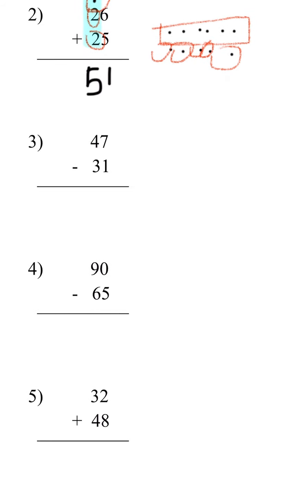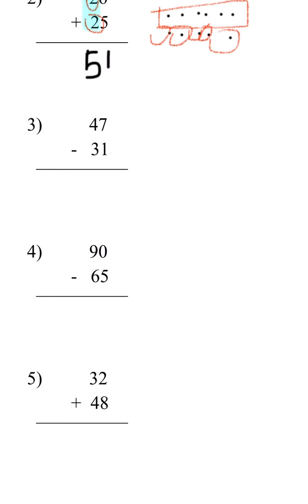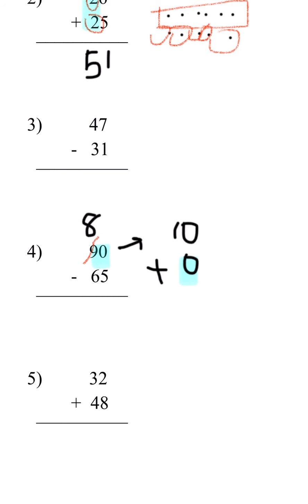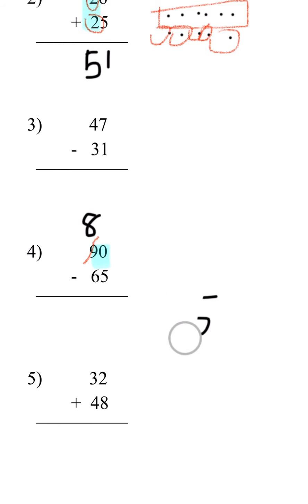Now for number 4, we have 90 minus 65. Again, we have to start with the 1's place, but we can see that 0 is less than 5. We're going to borrow 1 tens from 9. 9 minus 1 is 8. And this 0 — we're going to do 10 plus 0 — the 1 doesn't have any numbers below so we're going to put 1. So this 0 became 10.